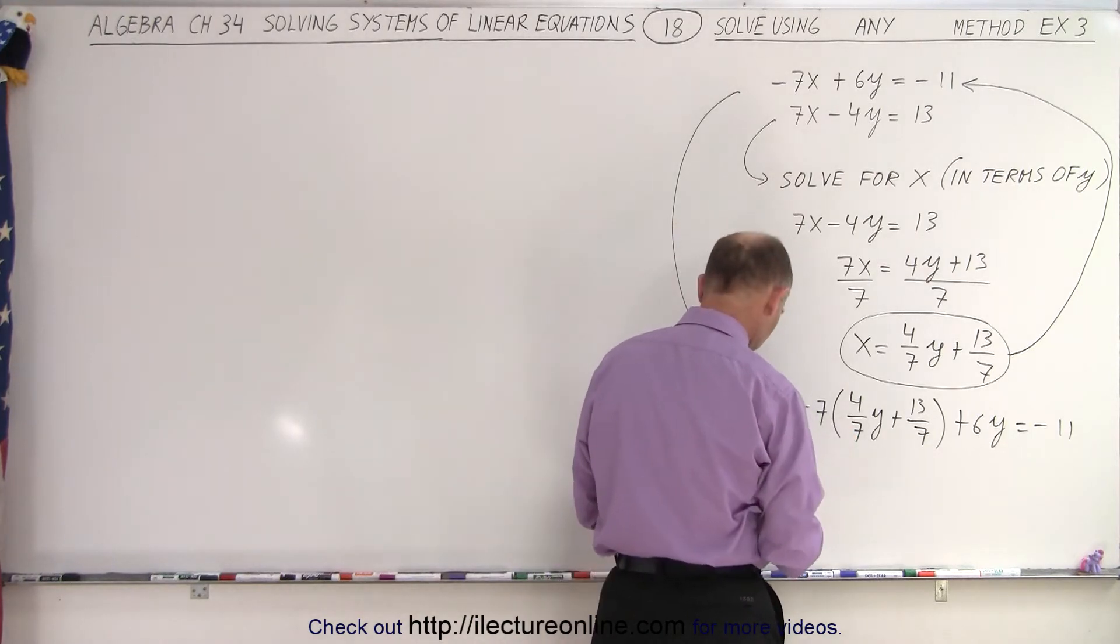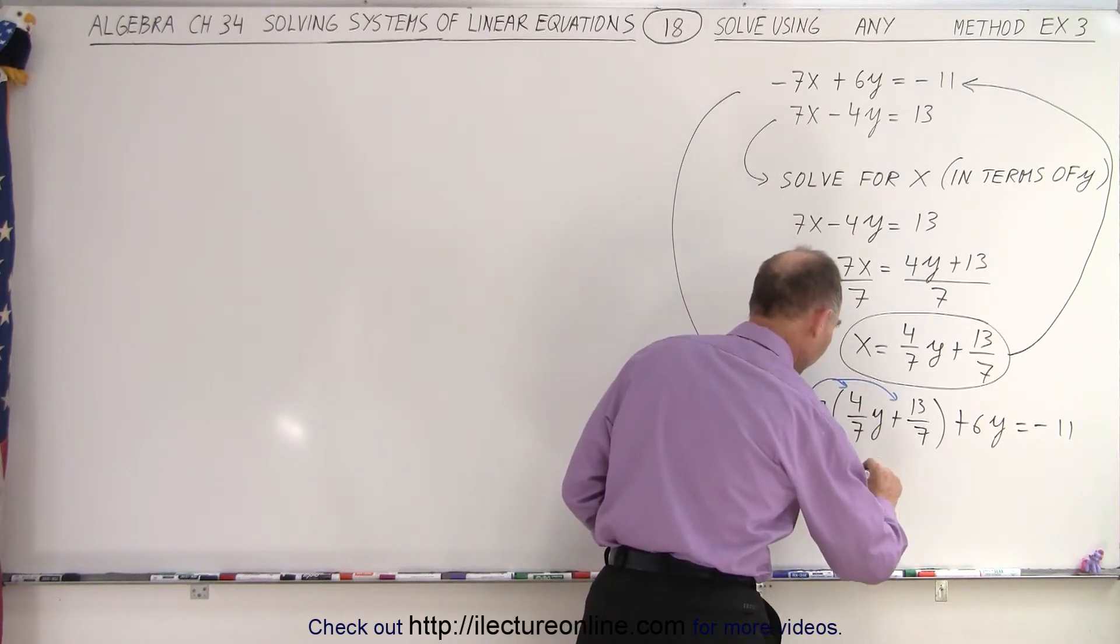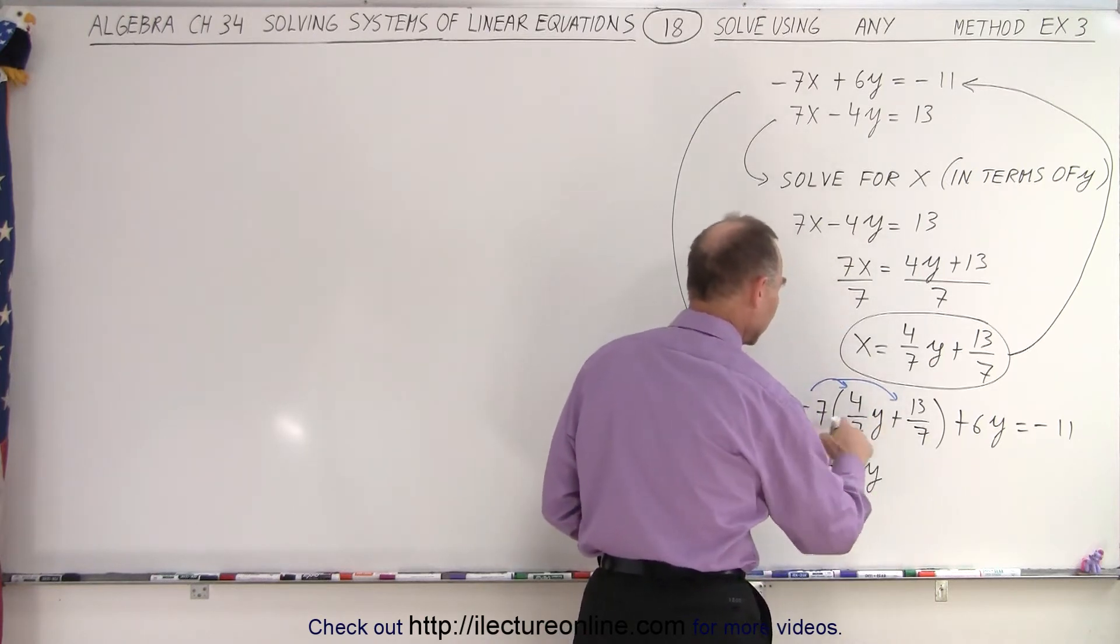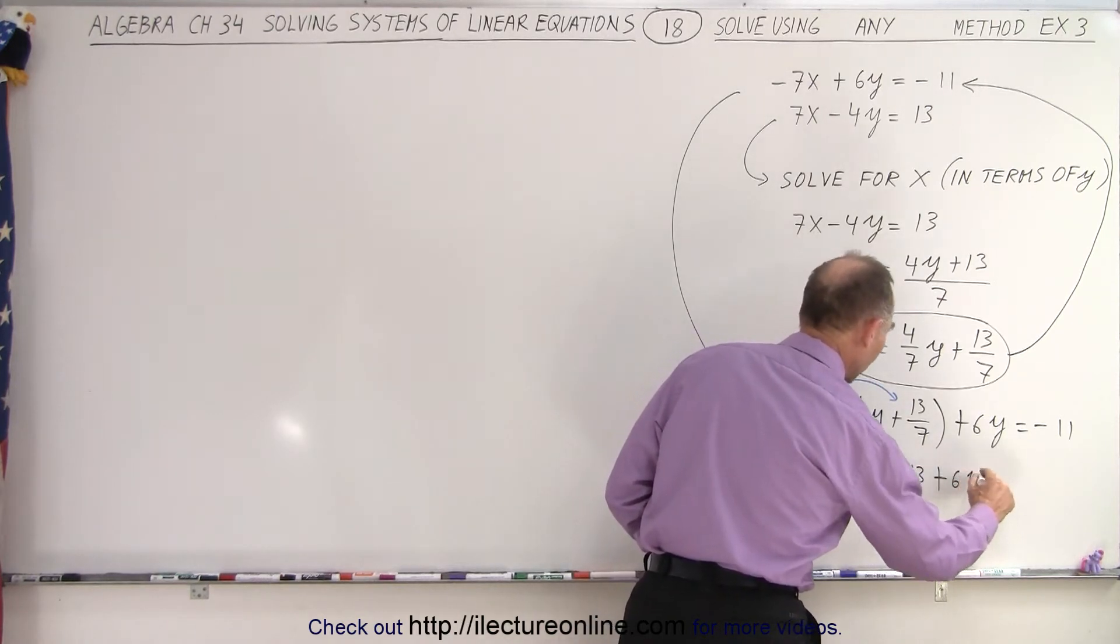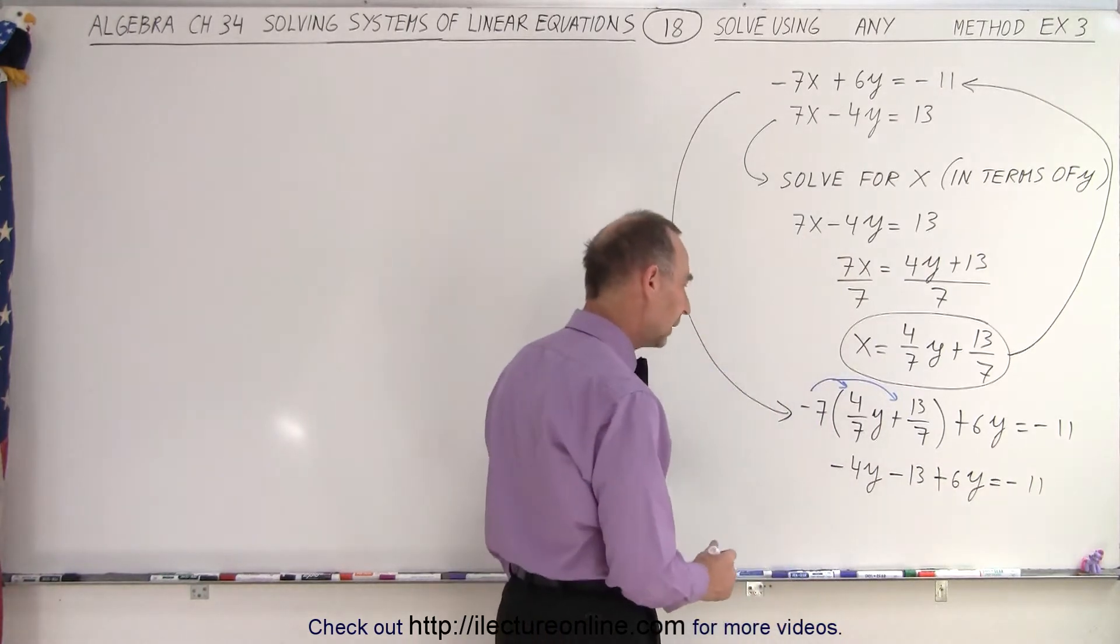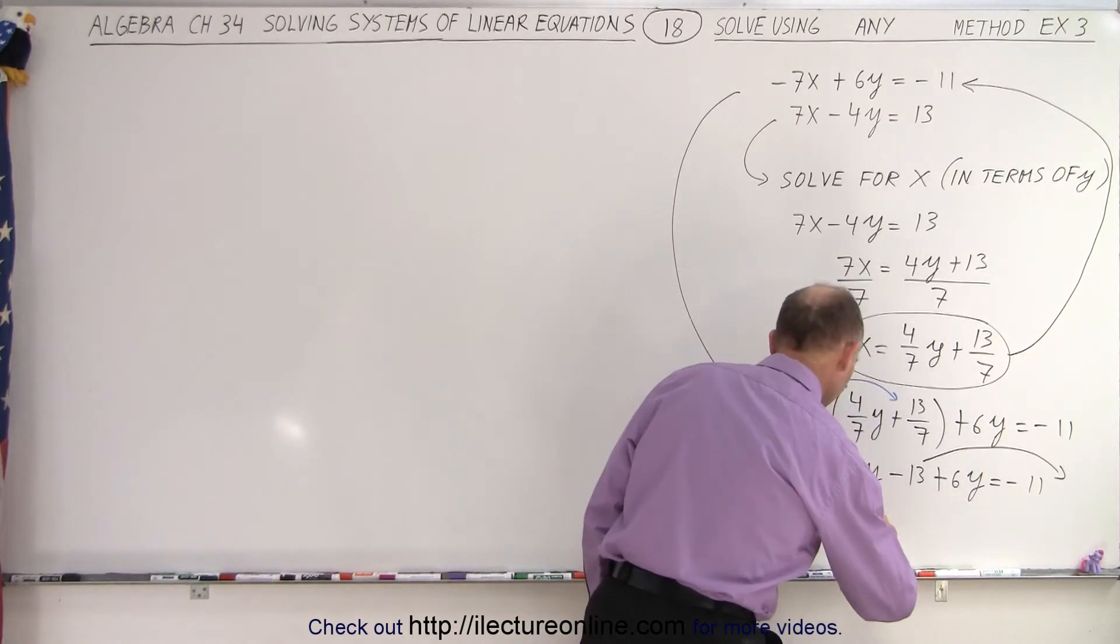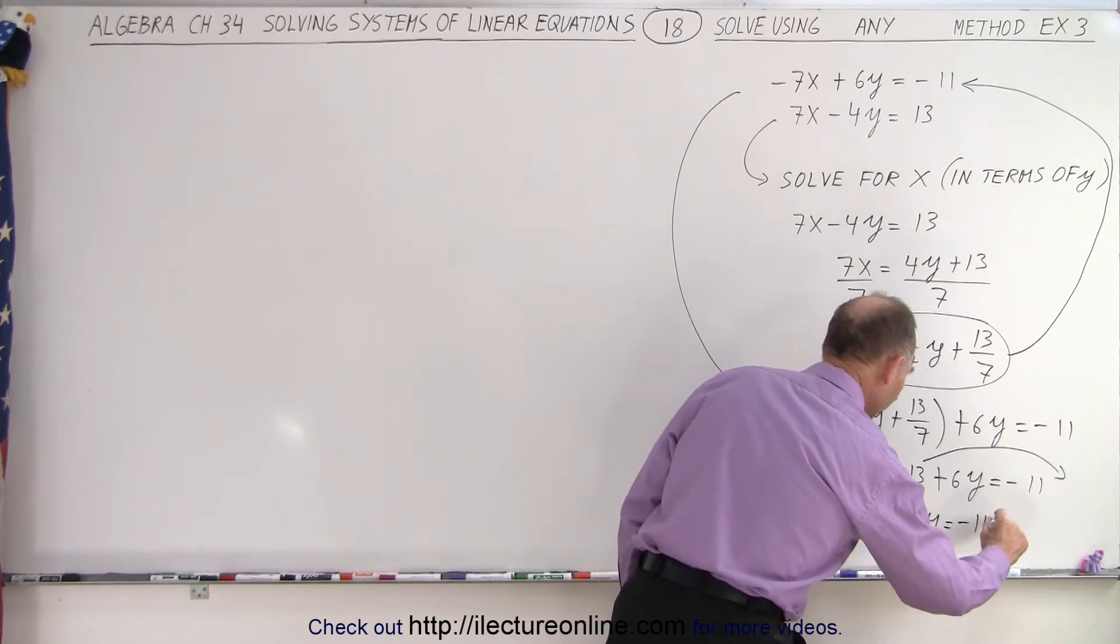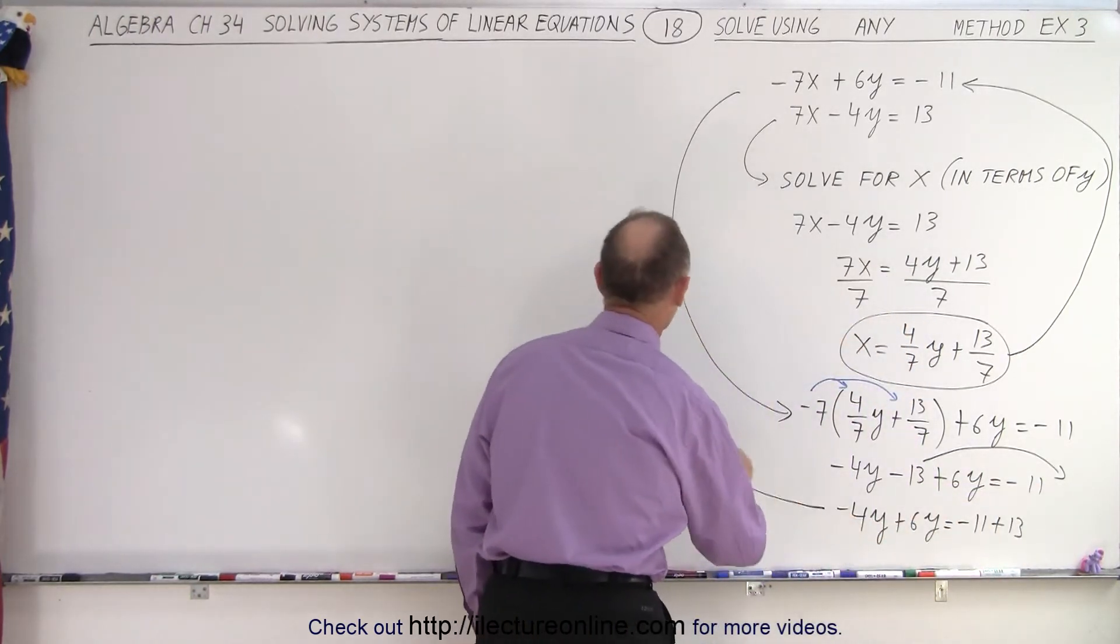So first we multiply this times this. So here we use the distribution property. We're going to distribute this across both terms of that binomial. The 7s cancel out, so you get a minus 4y, and here the 7s again cancel out. We get minus 13 plus 6y equals minus 11. Combine the y's. Well, first let's move the 13 over to the other side, so we end up with minus 4y plus 6y is equal to minus 11 plus 13 because the negative 13 becomes plus 13 when we move it to the other side.